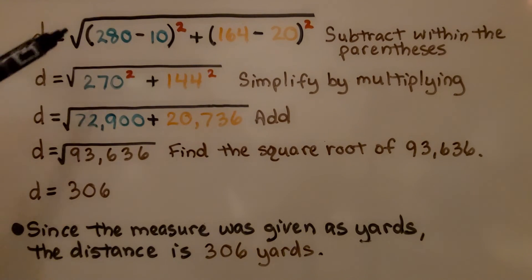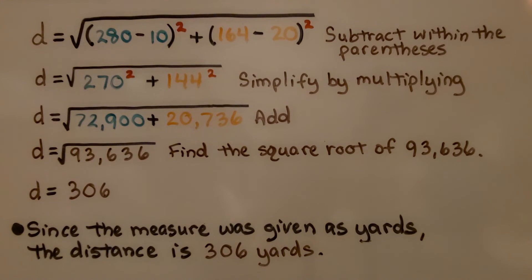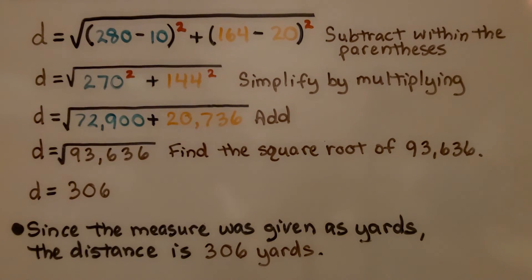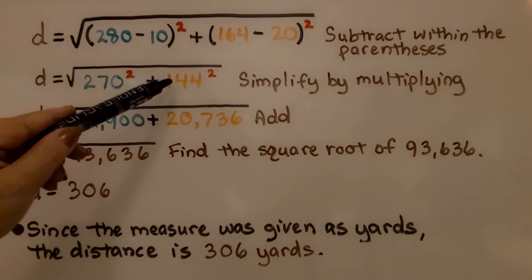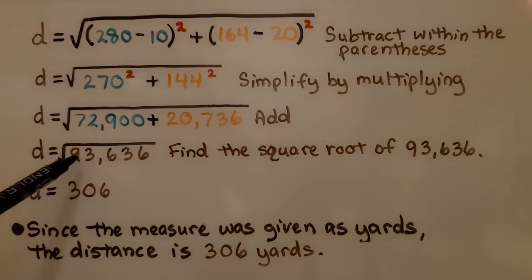We substitute those values into the distance formula, and we have distance is equal to the square root of 280 minus 10 squared plus 164 minus 20 squared. We subtract within the parentheses and we get 270 squared plus 144 squared under the radical sign. Now, we simplify these by multiplying. 270 times 270 is 72,900. 144 times 144 is 20,736. We add them together and get 93,636. Now, we find the square root of 93,636, and we know that d, the distance, is equal to 306. And since the measure was given as yards, the distance is 306 yards.